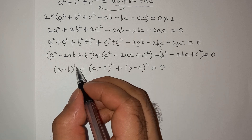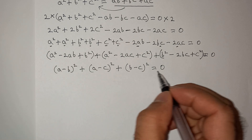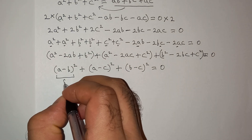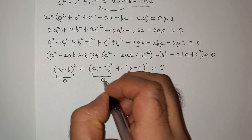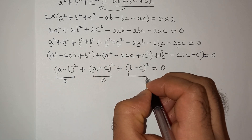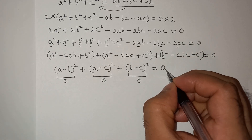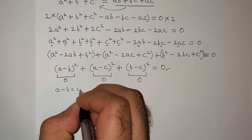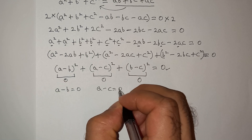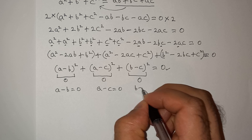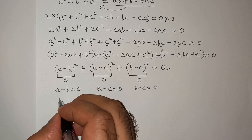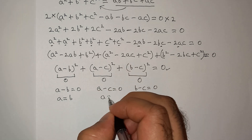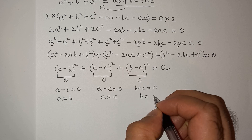Since these are squared numbers they cannot be negative, and their sum equals 0. So each term must individually equal 0: a minus b equals 0, and a minus c equals 0. This means a equals b, a equals c, and b equals c.